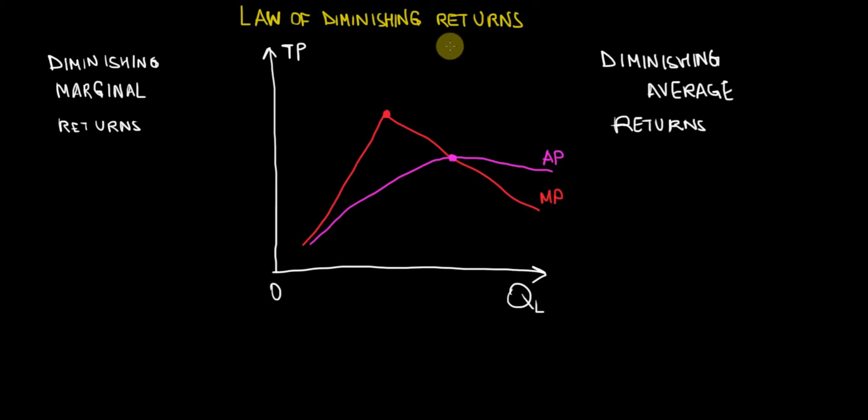In my example with the apples and the employees, the reason being was that they become less efficient at harvesting the apples because there's only so much apples that can be produced on the fixed input of land, and therefore with every additional employee there's going to be less and less apples harvested by each worker.